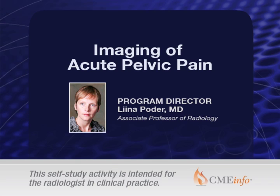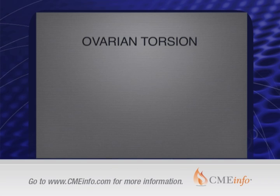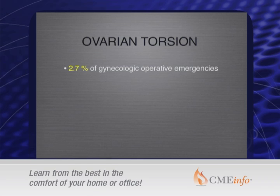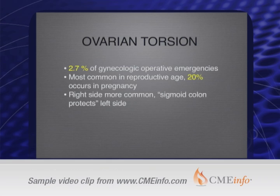Moving on to other etiologies that are somewhat emergencies of the female pelvis: ovarian torsion. It accounts for 2.7% of gynecologic operative emergencies and is most common in women of reproductive age. Twenty percent of cases occur in pregnancy, and apparently the right side is more common because of where the sigmoid colon is located.